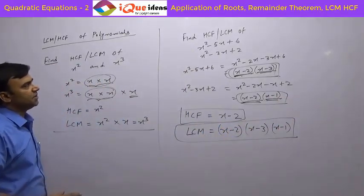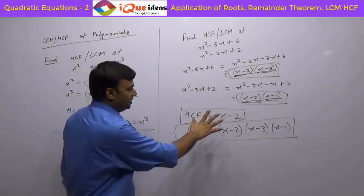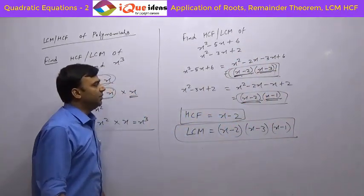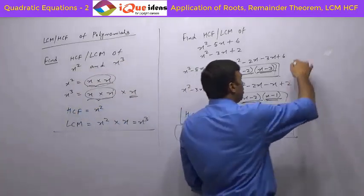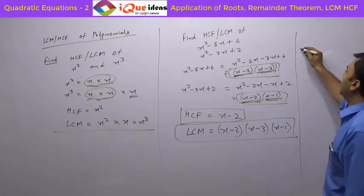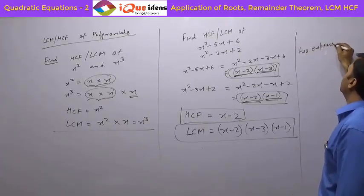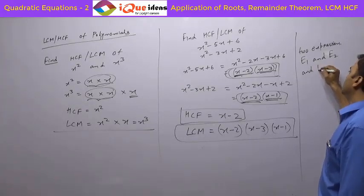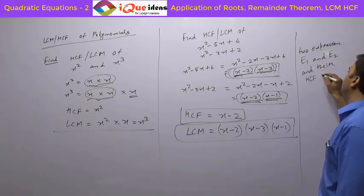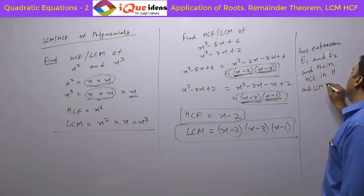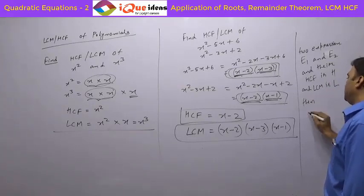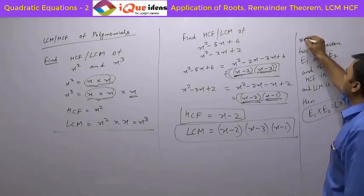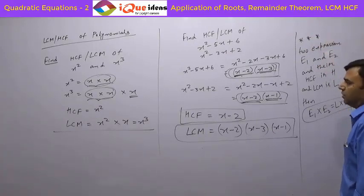So whatever is common will be taken as HCF just once, and LCM will be the common thing only once with everything remaining multiplied to it. The further rule is: if there are two expressions E1 and E2 with HCF H and LCM L, then E1 into E2 is equal to L into H. This is a very important rule applicable for numbers as well as expressions.